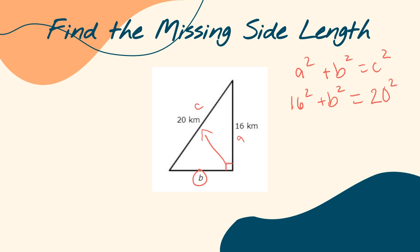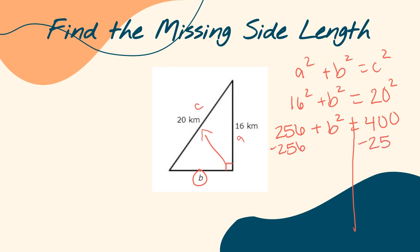Now I'm ready to multiply everything out. 16 squared is 16 times 16, which equals 256. I don't know what B is, so I leave that as B squared. And 20 squared is 20 times 20, which equals 400. I can't simplify anymore, so I subtract 256 on both sides — it cancels out on one side, leaving B squared, and on the other side I have 400 minus 256. What does that equal? 144.